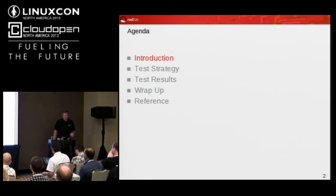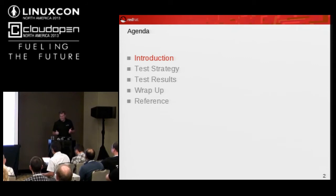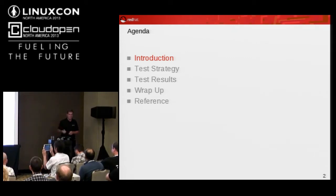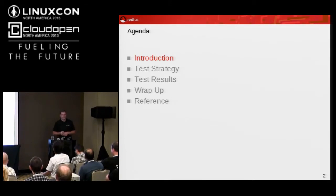My name is Mark Wagner, as you could probably guess. I'm in the performance team at Red Hat. I've been there for over six years now. One of the nice things about being at Red Hat is you get to work on everything — one day I'm working on our RHEL 7 release, the next day I'm working on OpenStack. I currently run most of the cloud performance work at Red Hat.